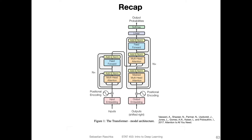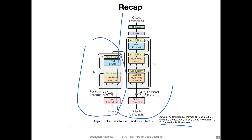Just to briefly recap, this is the transformer architecture — the original one from the 'Attention Is All You Need' paper. The methods we will talk about, like BERT and GPT, are based on this fundamental architecture. Of course, they make some modifications, but fundamentally BERT borrows from the encoder part and GPT borrows from the decoder part. We will see in the upcoming videos how these models relate to this original model.